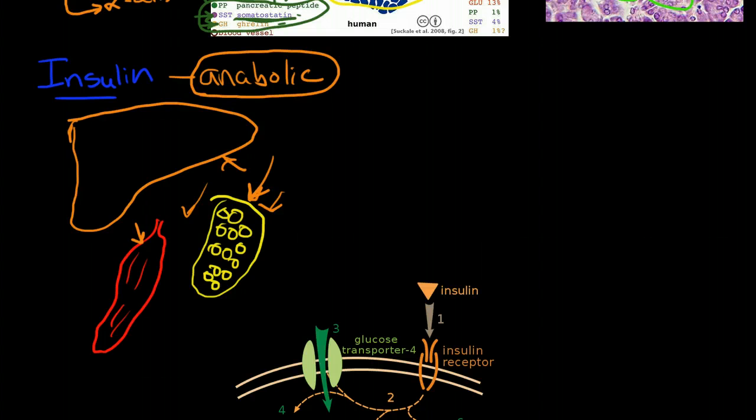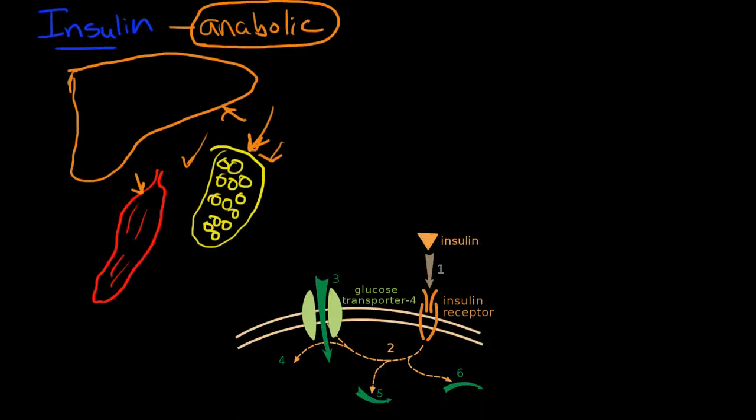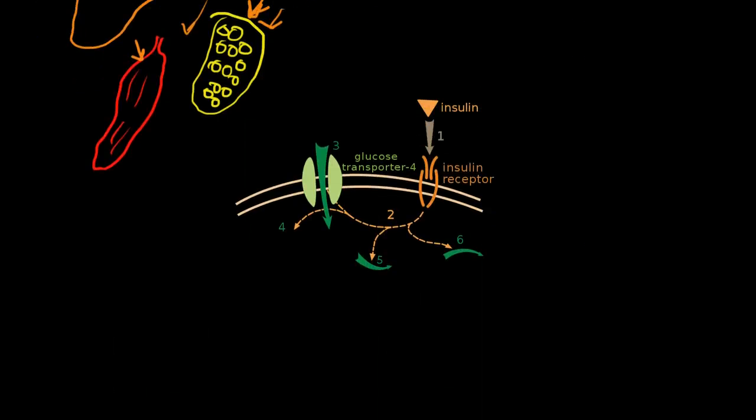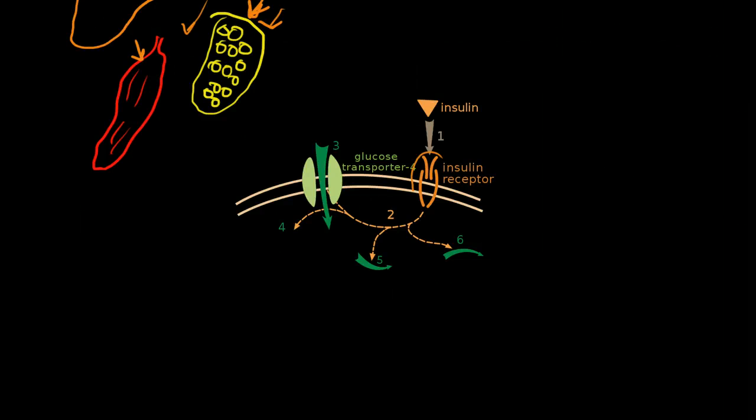Now, so we know that throughout the body, insulin has an important role in allowing glucose to be transported into the cell. This is an insulin receptor here. So when insulin is released into the bloodstream by the pancreas, it binds with this insulin receptor on cells throughout the body. And really, there's insulin receptors on almost every cell of the body except within the central nervous system.